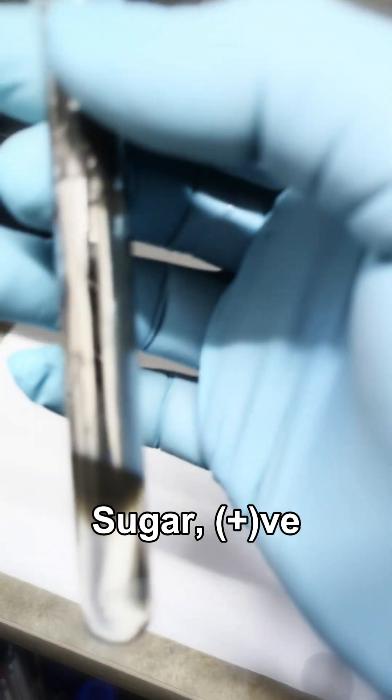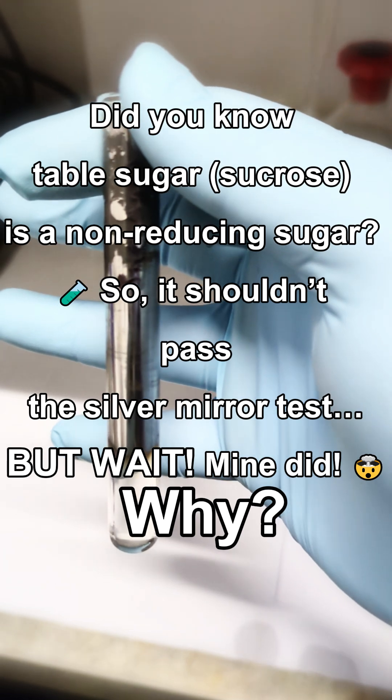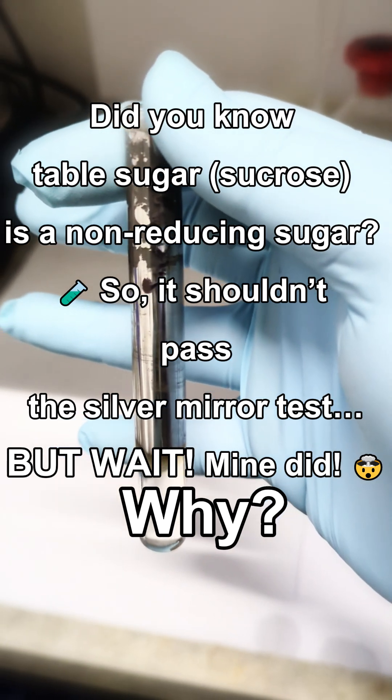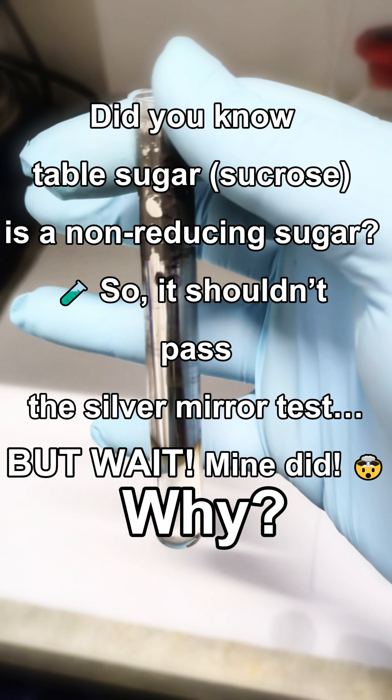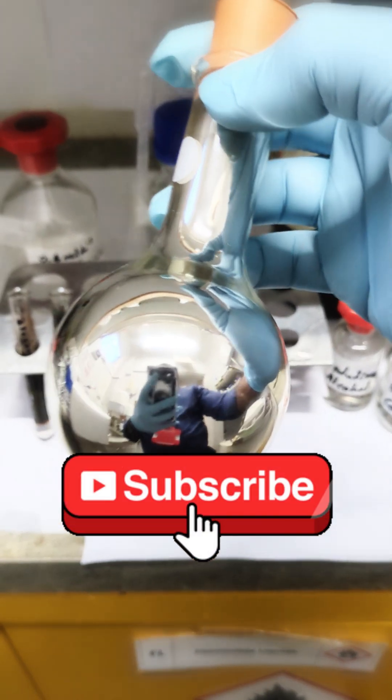Sugar solution: positive. Whoa, hold on a second, that's wrong. Did you know table sugar sucrose is a non-reducing sugar? So it shouldn't pass the silver mirror test. But wait, mine did. Why? Comment below. Subscribe for more knowledge.